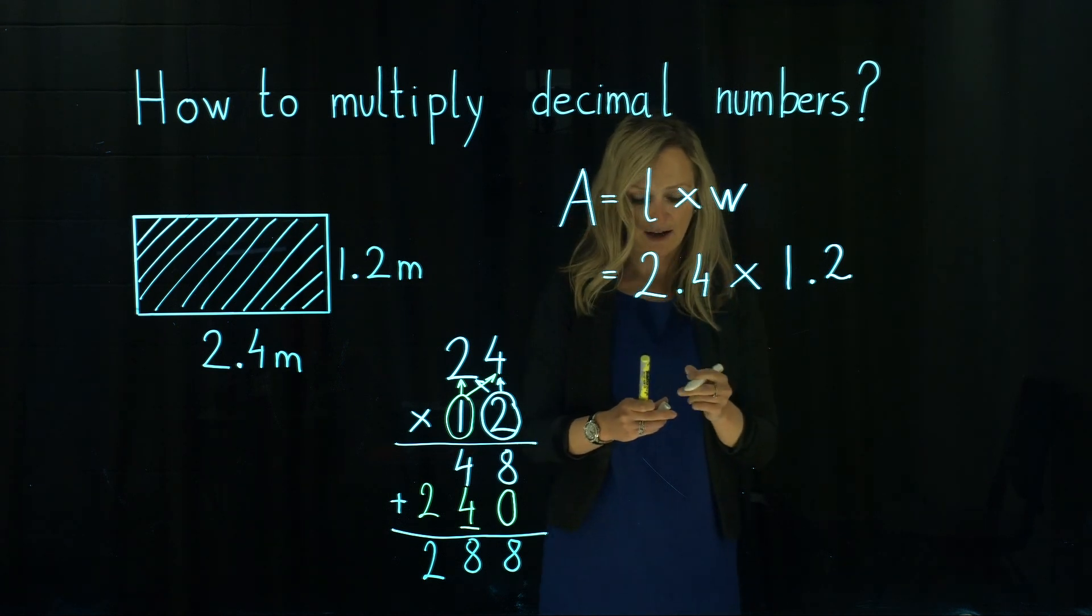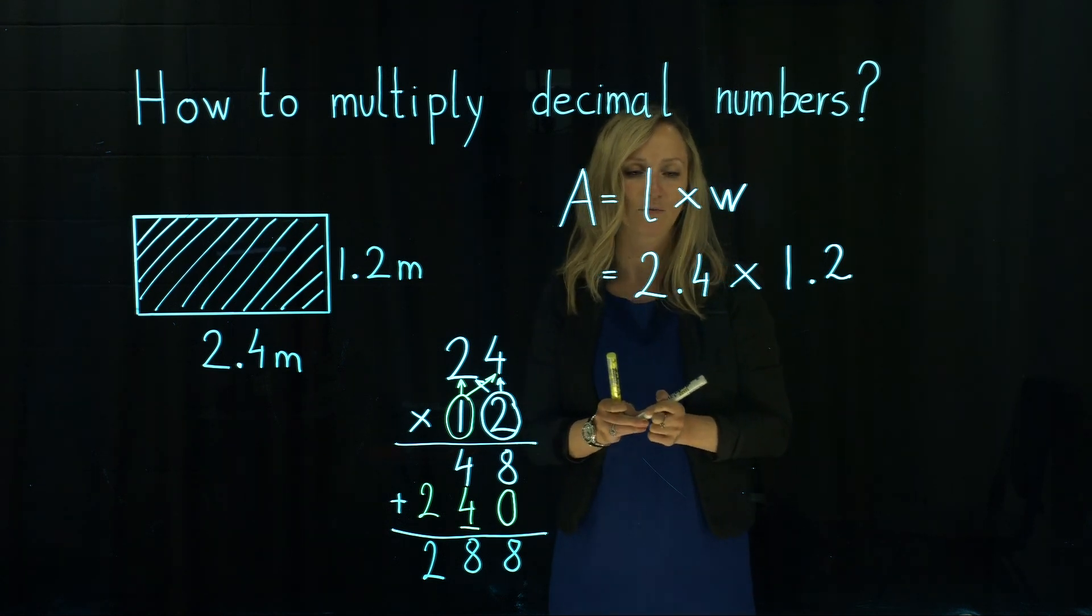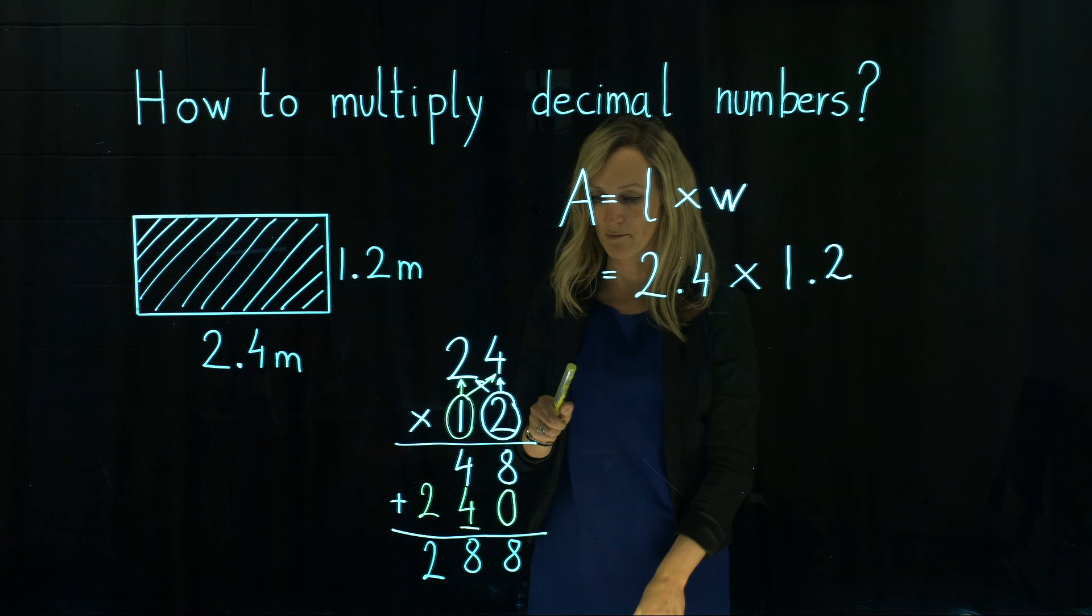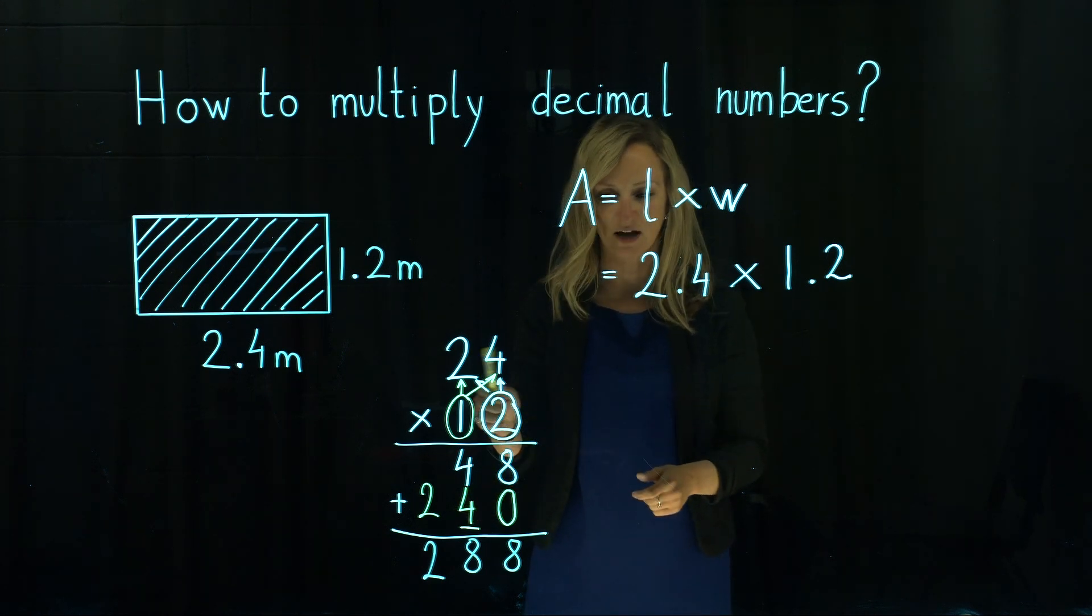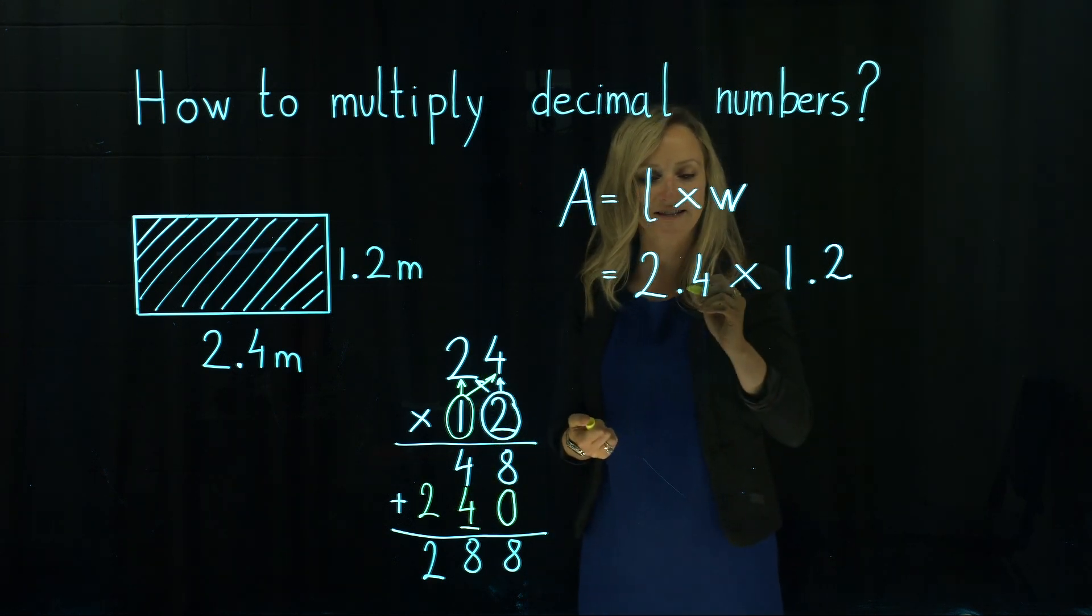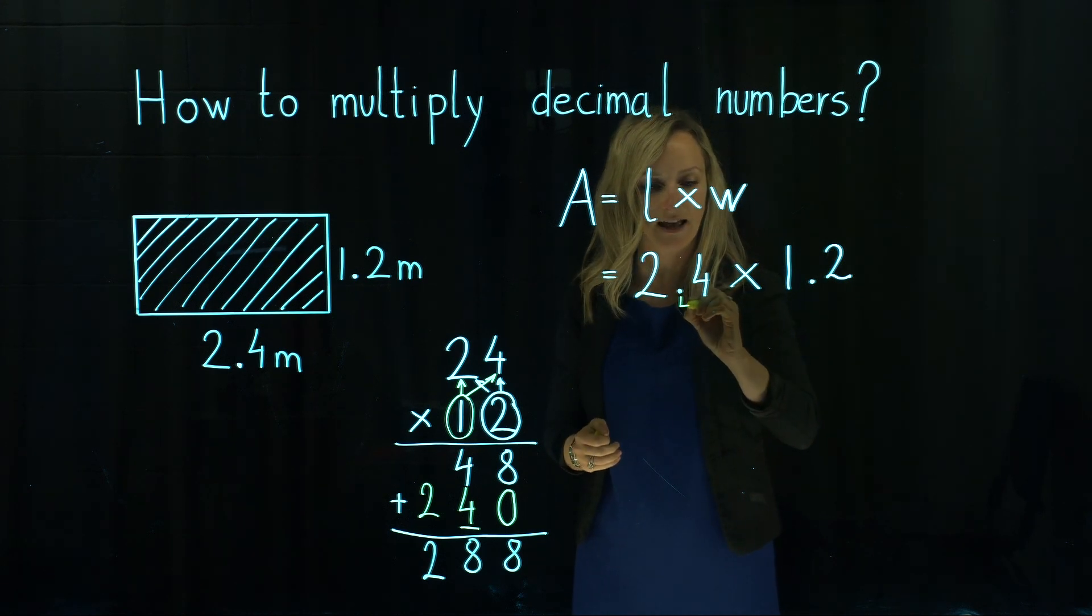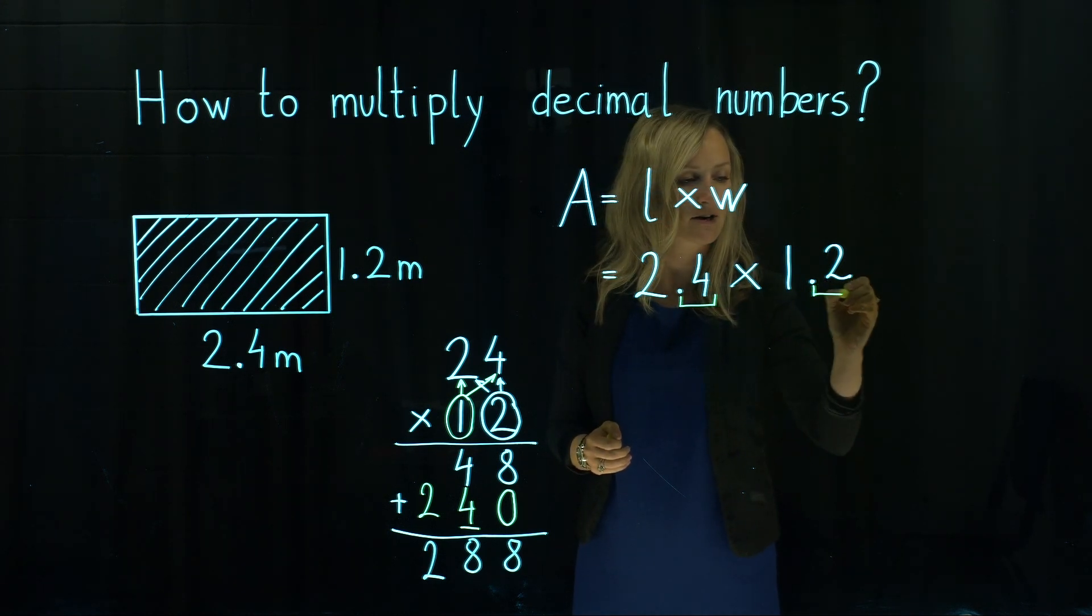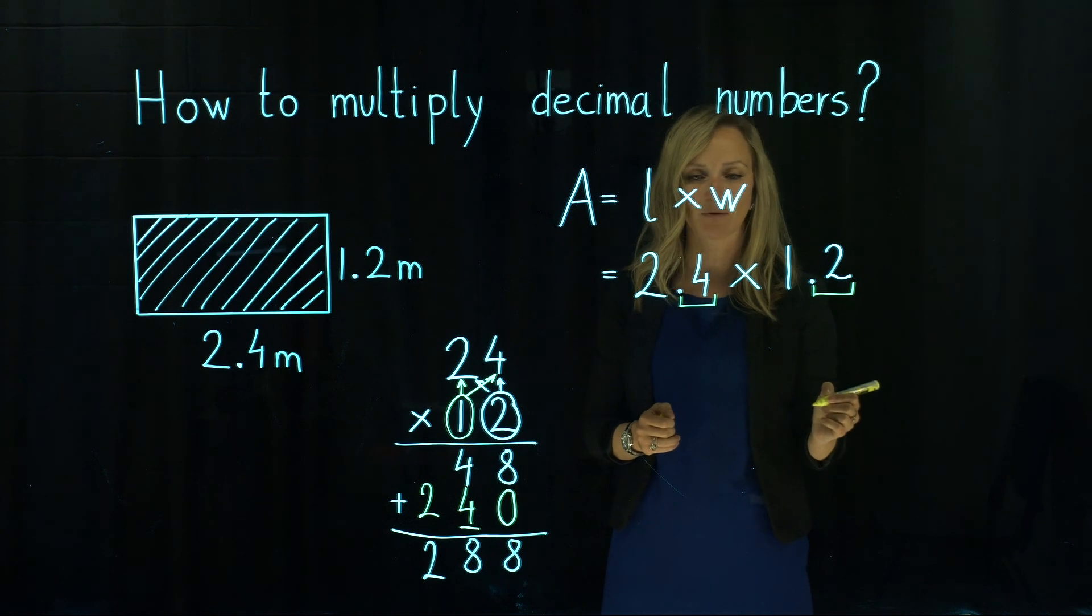But we didn't have our initial question with whole numbers. This is our extra working. So that's why we need to now go back to our decimals and look at how many numbers we've got after the decimal point.